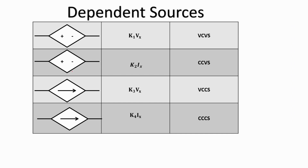These are the symbols used to represent these dependent sources in a circuit. This is a voltage controlled voltage source. You can identify it as a voltage source by the plus and minus symbol, similar to a normal independent voltage source. The parameter which controls it is understood from the expression written next to the source — for example, k times Vx — where Vx is the voltage drop across an element Rx in the circuit.